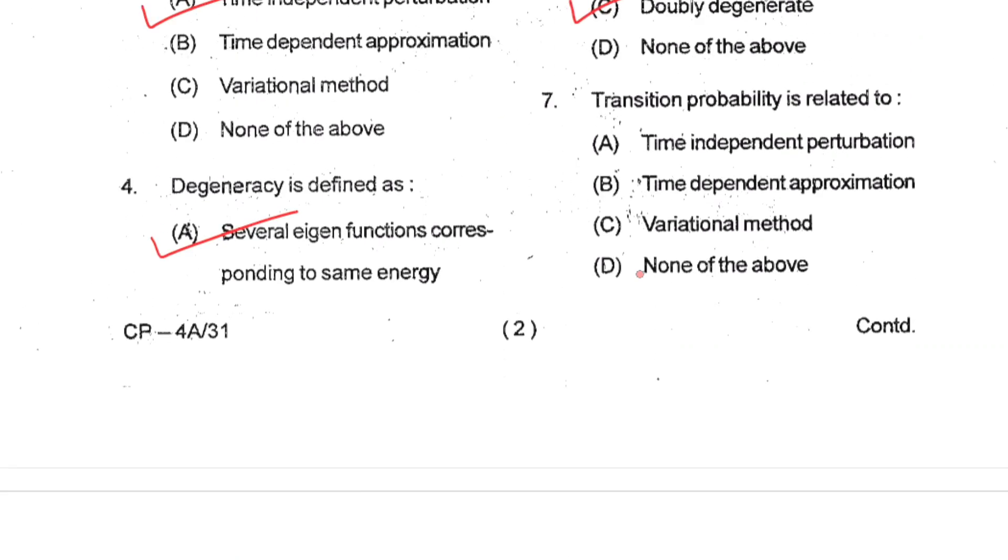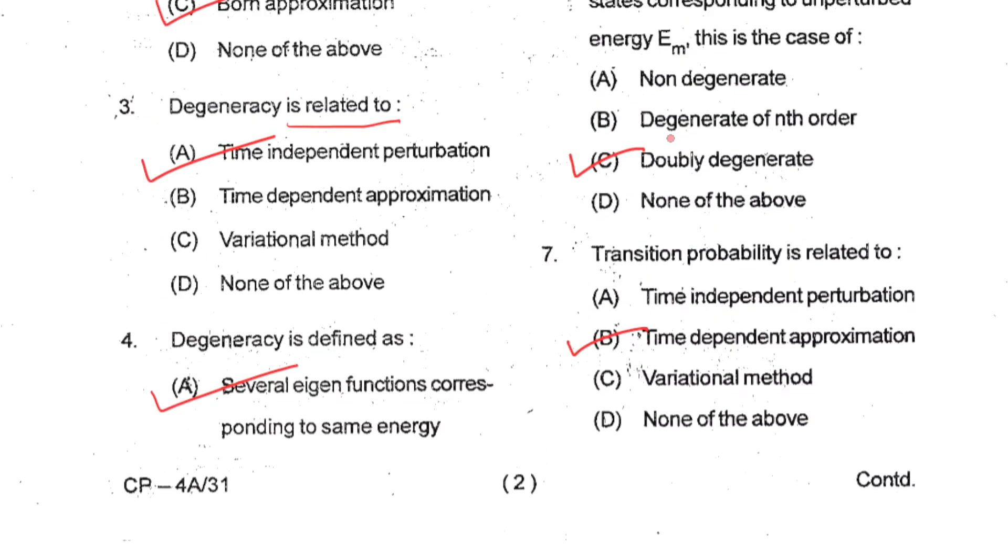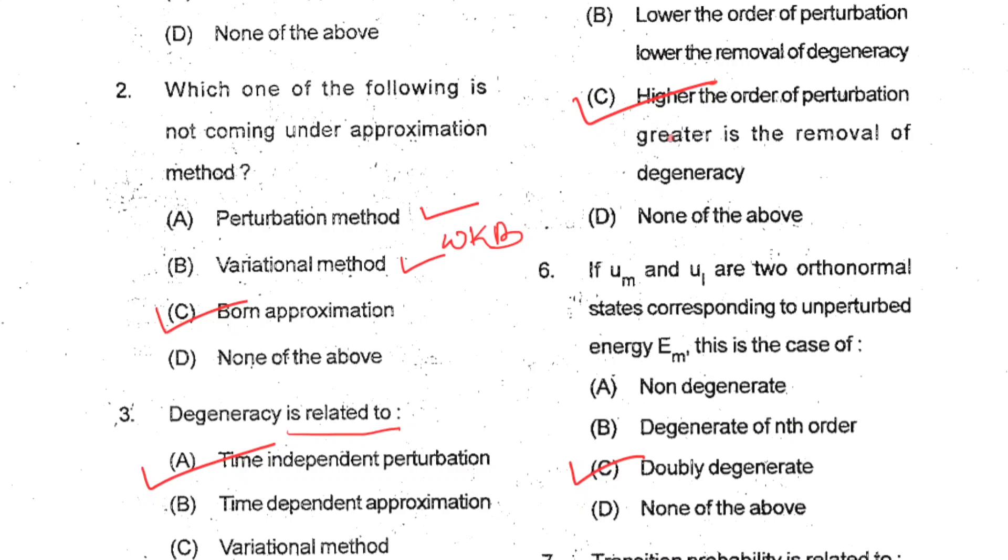Question number seven: Transition probability is related to time dependent approximation. So B is your correct option. After solving these seven questions, you can understand that they are covering full syllabus. They have included the questions from WKB, perturbation method, variational method, from time independent perturbation, time dependent approximation. So you need to cover the full syllabus and know all the basic things related to those concepts.